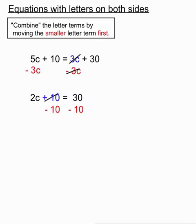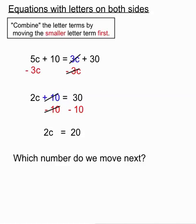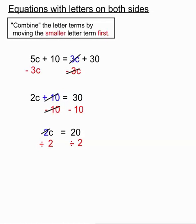On the left hand side the plus 10 and the minus 10 cancel each other out leaving us with that 2c on its own. On the right hand side we do the calculation 30 minus 10 equals 20. Then we're looking to move the 2 so the c is left on its own. The 2 is multiplying so we will divide by 2 both sides. On the right hand side the calculation is 20 divided by 2 equals 10.